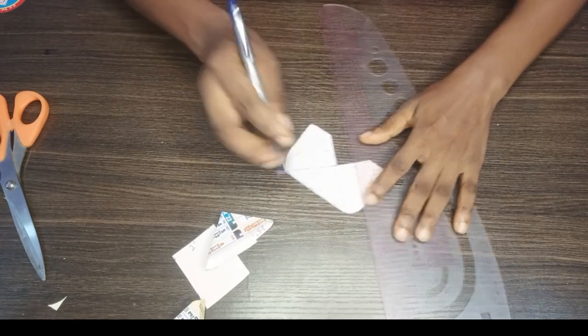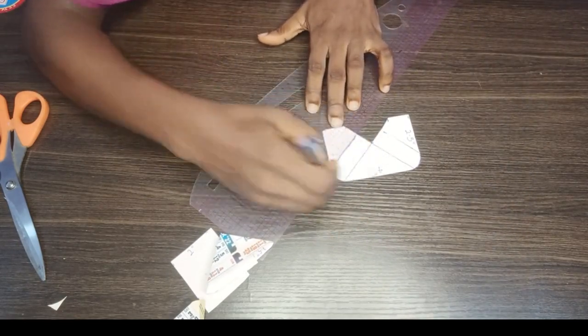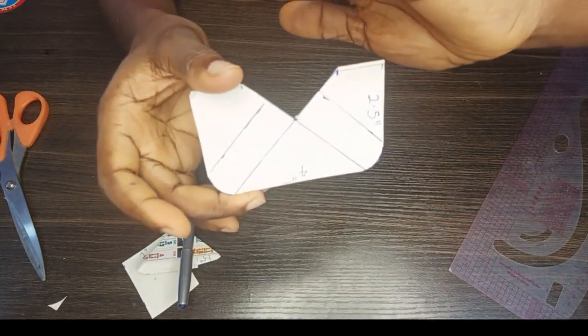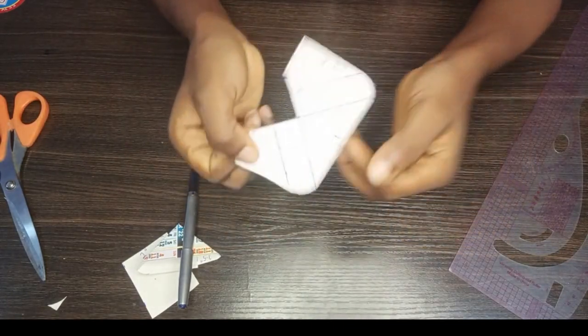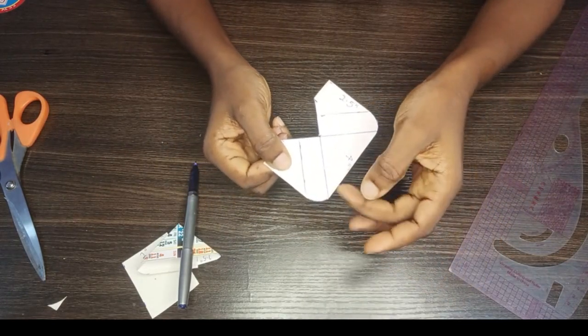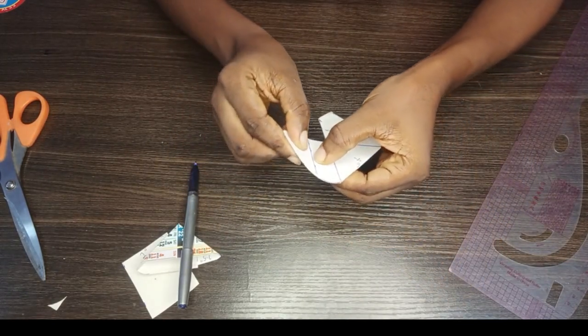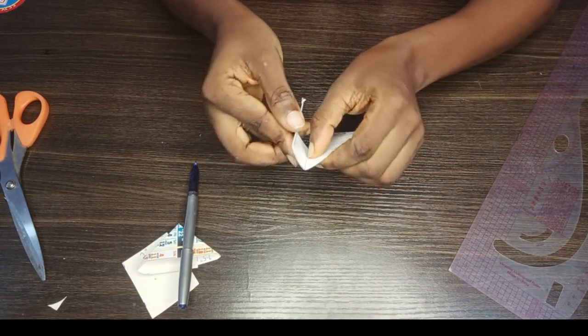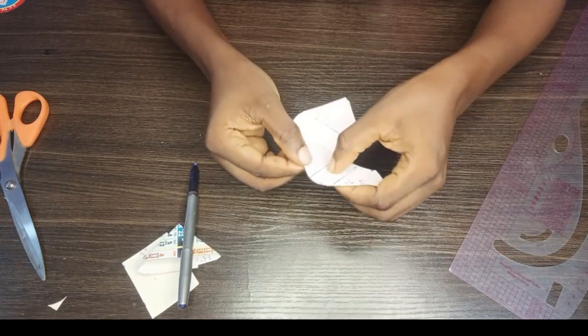Then I will take my ruler and mark it out. Those parts that I marked out, I am going to - it's only this way, this one. Do the same thing to the side.